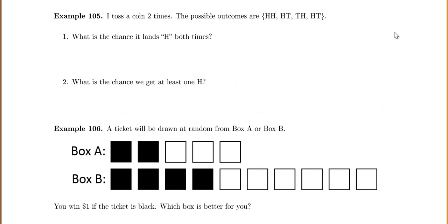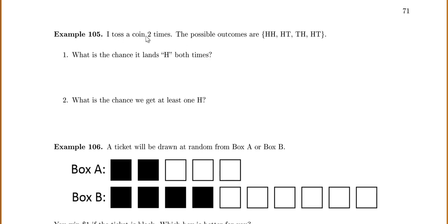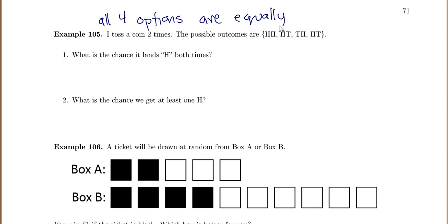I toss a coin two times. The possible outcomes are HH, HT, TH, and TT. All four of these outcomes are equally likely because for a fair coin, heads or tails on the first toss are equally likely, and heads or tails on the second toss are equally likely.